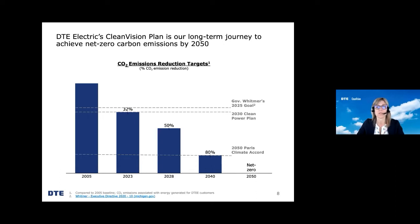DTE was one of the first electric utilities in 2017 to announce carbon reduction targets, and since then we've updated those targets three times. As you can see from page eight, DTE Electric's net zero goal includes reducing carbon emissions 50% by 2028, 80% by 2040, and ultimately reaching net zero emissions by 2050. We think we have a pretty good line of sight to our target of 80% by 2040. Our Clean Vision Plan includes investment in state-of-the-art natural gas generation, expanding renewables, retiring coal plants, and promoting energy efficiency and demand response.